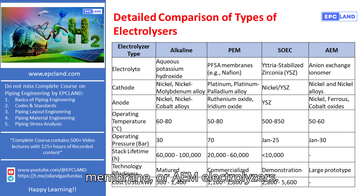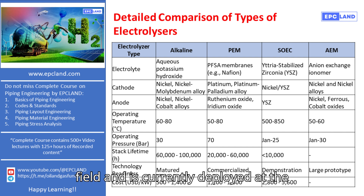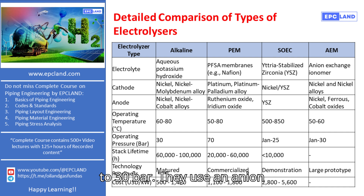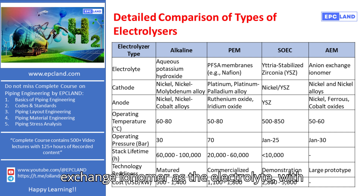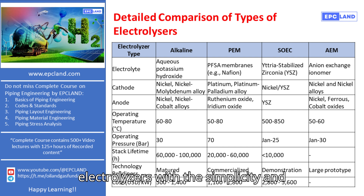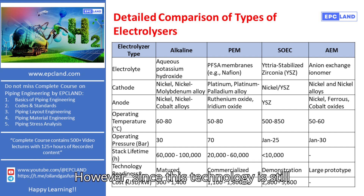Finally, we have the anion exchange membrane, or AEM, electrolyzers. This is the latest technology in the field and is currently deployed at the large prototype level. AEM electrolyzers operate at lower temperatures, around 50 to 60 degrees Celsius, and at pressures ranging from 1 to 30 bar. They use an anion exchange ionomer as the electrolyte, with nickel-based materials for the cathode and a combination of nickel, ferrous, and cobalt oxides for the anode. AEM electrolyzers combine the less harsh operating conditions of alkaline electrolyzers with the simplicity and high efficiency of PEM electrolyzers. However, since this technology is still in its early stages, its commercialization is limited.